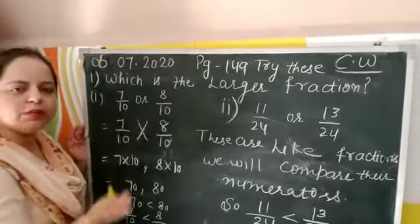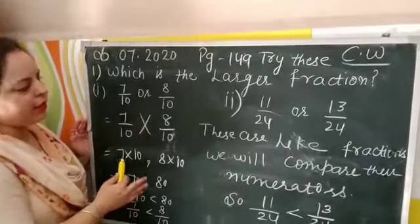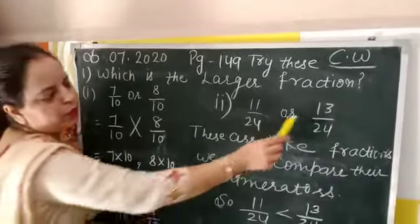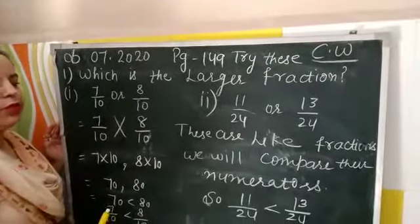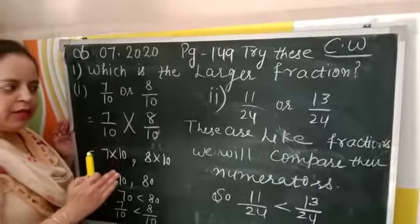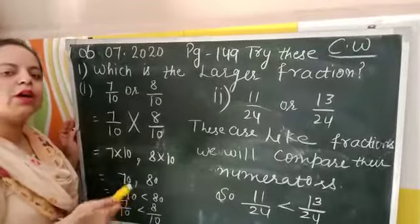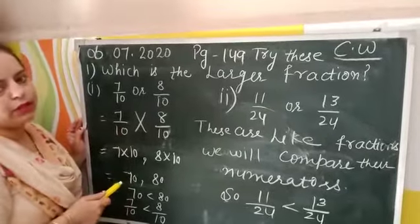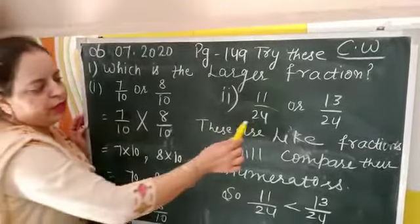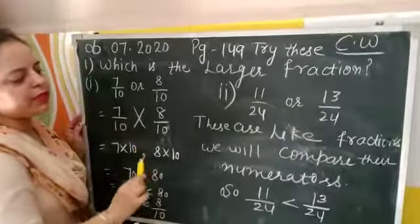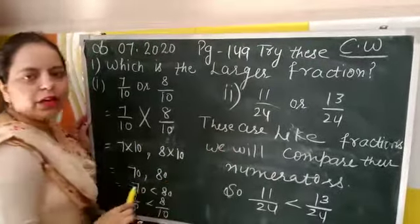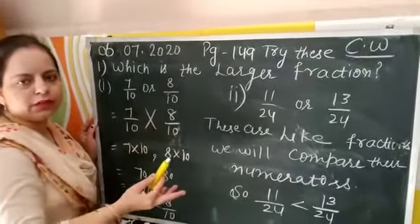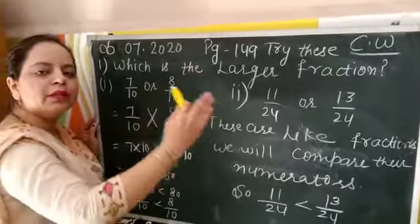Now the second part: 11 by 24 or 13 by 24. Students, there is another method as well. When the given fractions are like fractions — meaning their denominators are the same — we can directly compare them without applying cross multiplication.